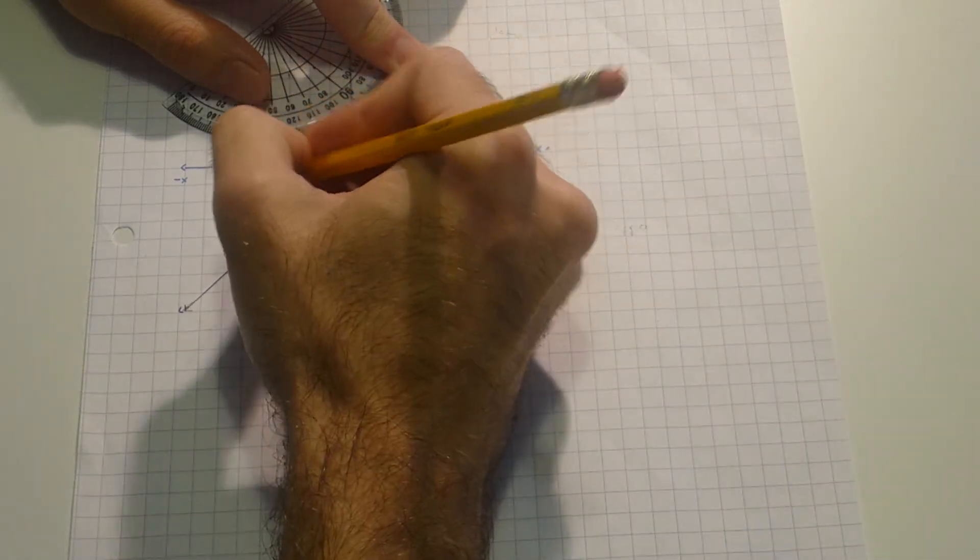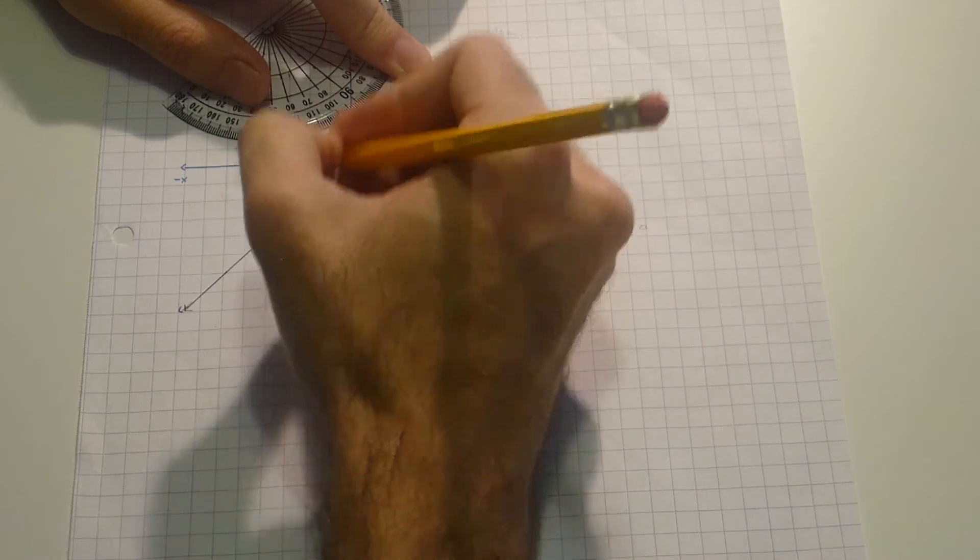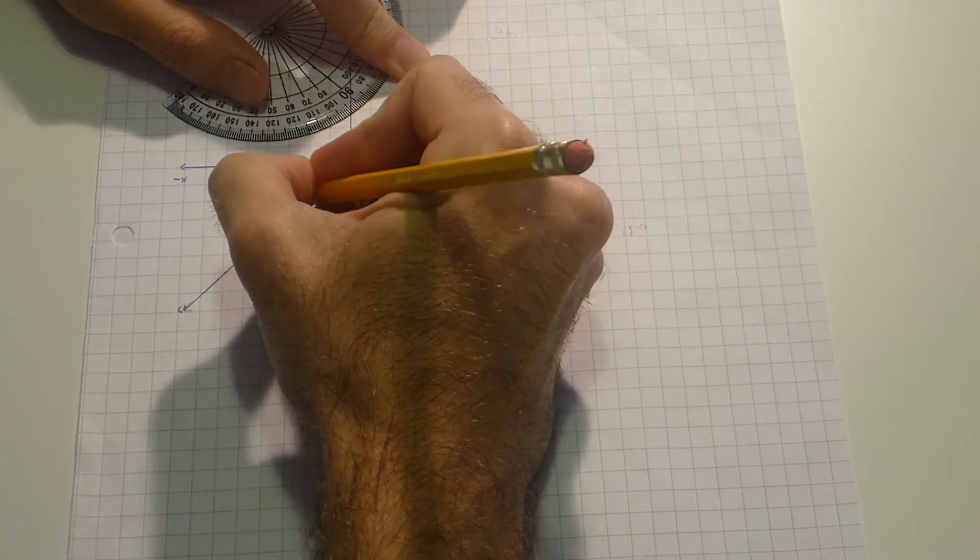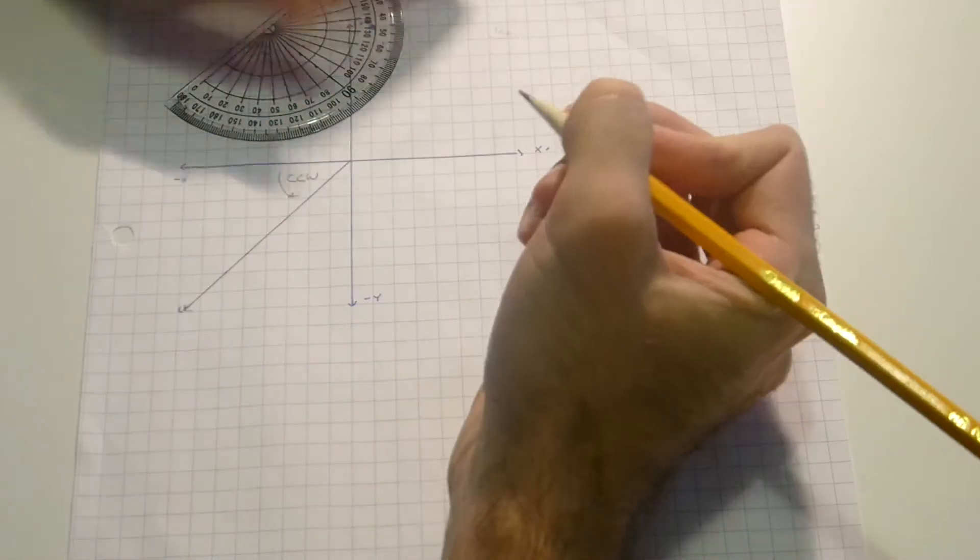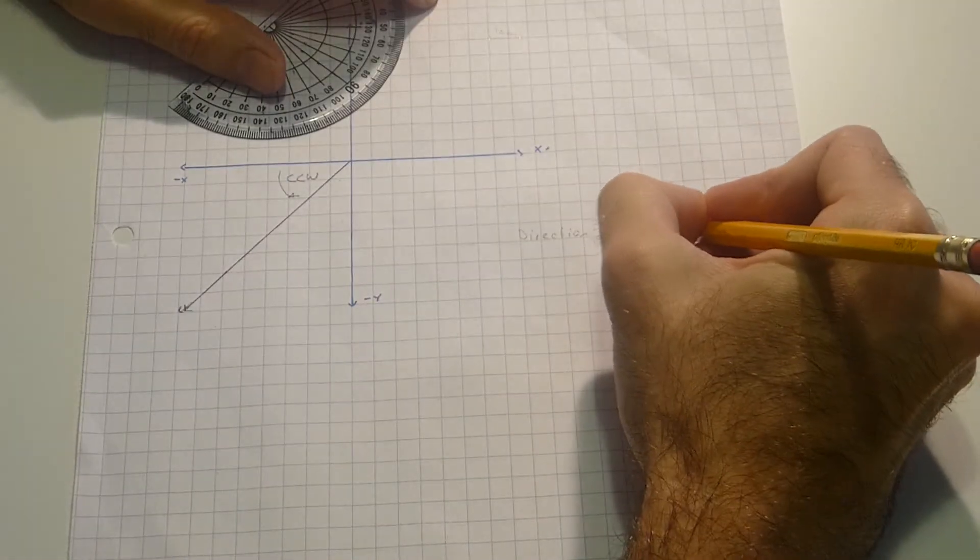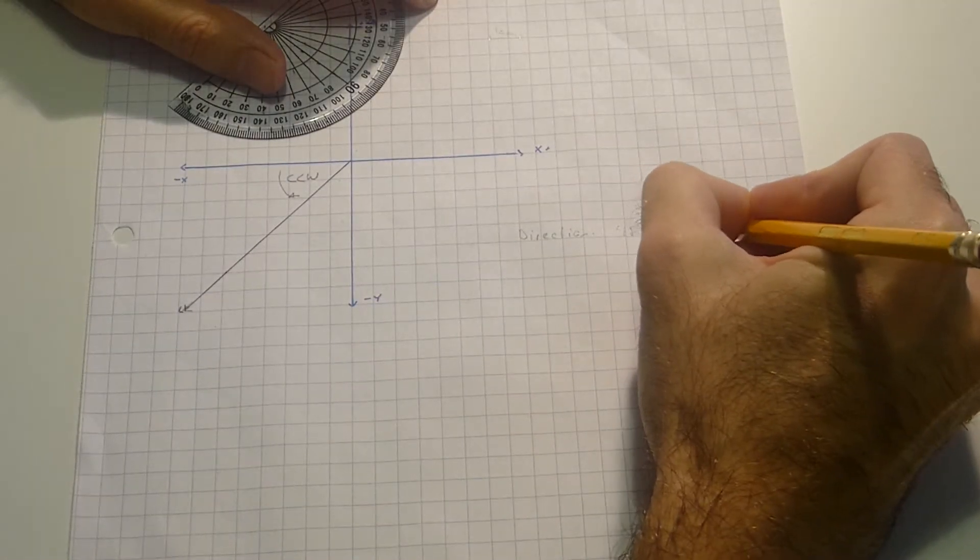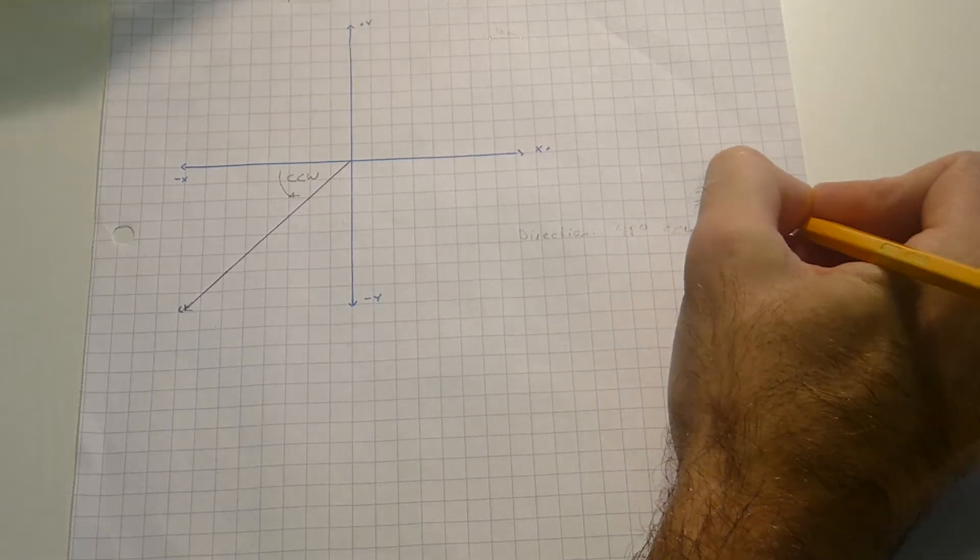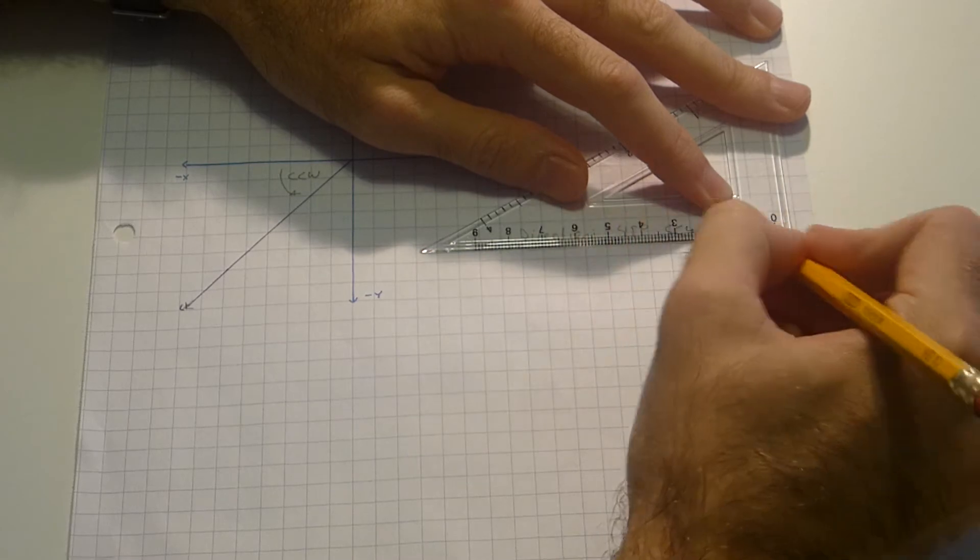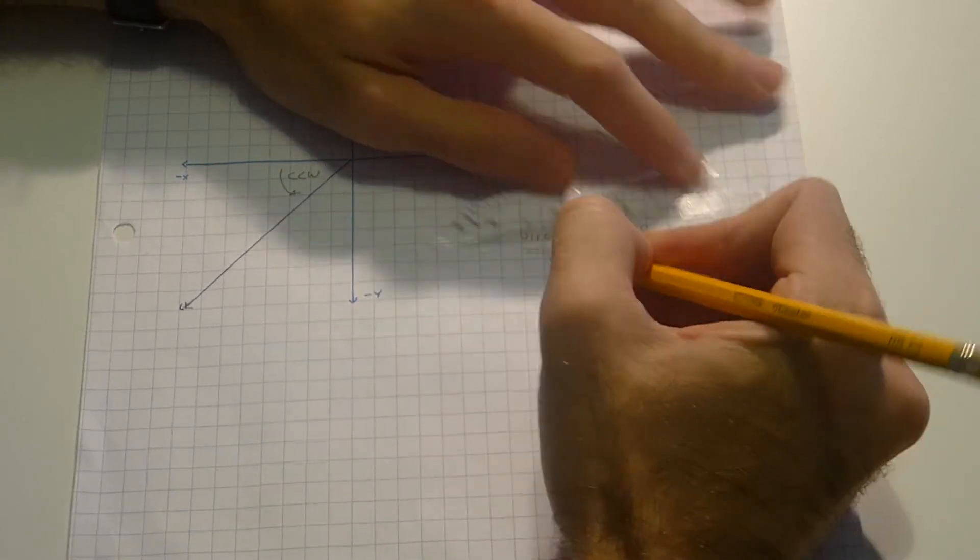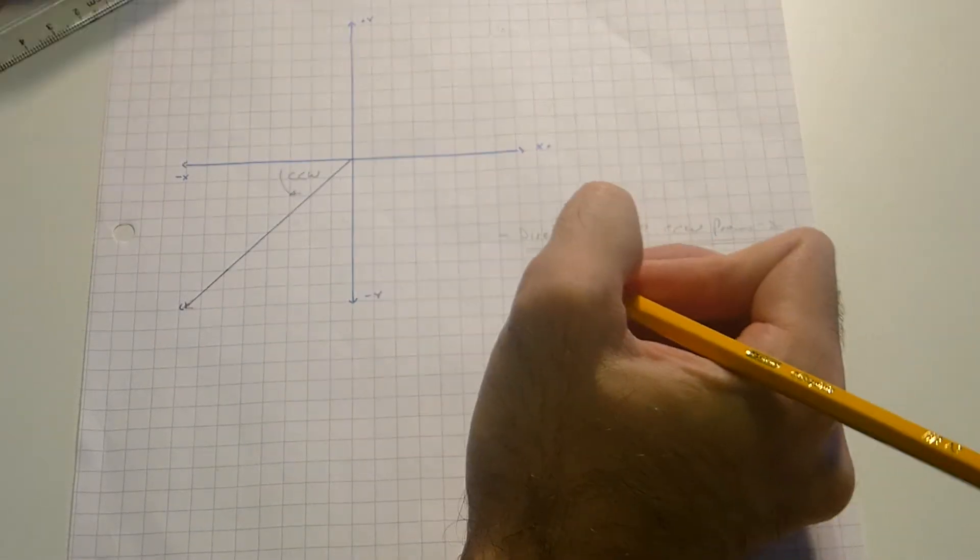Now I can choose if I go from minus x or from minus y. Let's go here. This is counter-clockwise. So counter-clockwise from minus x. Let's do some data lines. So first question is answered.